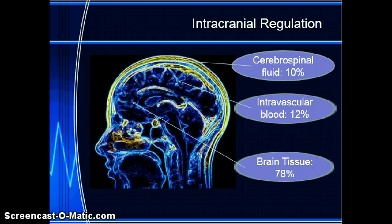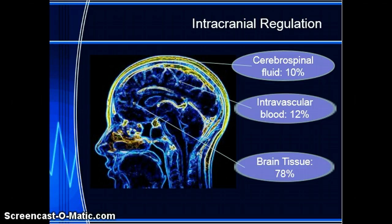You could think about your skull as an egg — once you crack it, the contents are going to spill out, and that's when we're going to be running into trouble. Factors that influence intracranial pressure include arterial and venous pressure, intra-abdominal and intrathoracic pressures. Things like coughing, blowing your nose, sneezing, tight restrictive clothing, if the head of bed is lowered below 30 degrees, posture, and temperature can all influence intracranial pressure, as well as blood gases — specifically carbon dioxide.